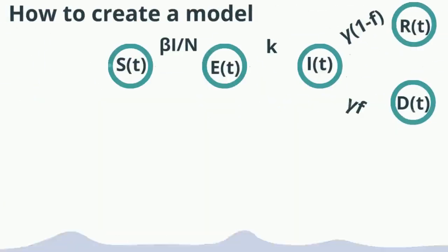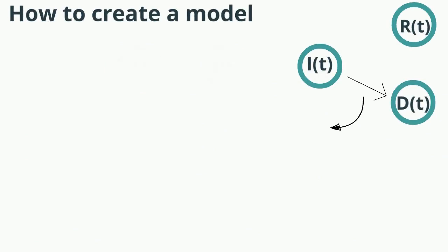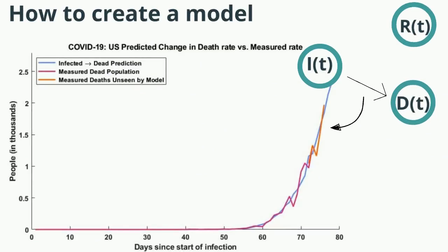However, this is one of two states that we have measurements for, so let's look at the death prediction using our infected prediction. Again, the model prediction is in blue, and our model hasn't seen the new data for the infected state or the new data for the death state. The data the model hasn't seen is once again plotted here in orange. While this is a limited validation of our model, the results look promising.